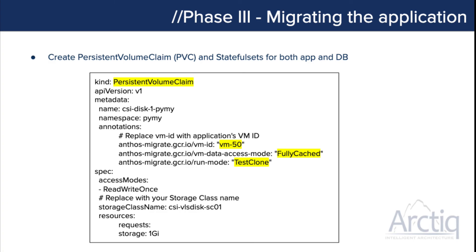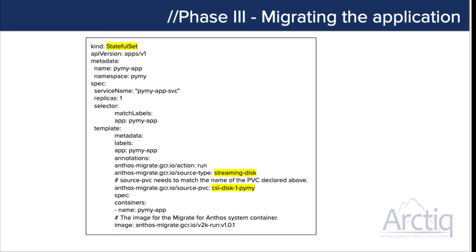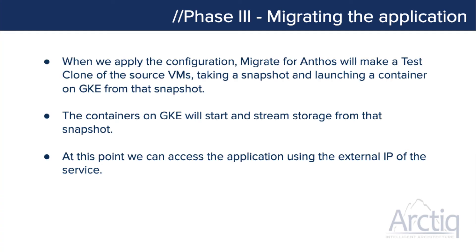We'll configure the run mode to 'test clone'. VMware will take a snapshot of the VM and we'll be able to stream that virtual machine into GKE. The other option is shutting down the virtual machine and moving it, but test clone allows us to continue using the VM on-prem while we move things into cloud. In the stateful set configuration we're going to use streaming disk, which allows the pods to stream the PV disk information. We provide the PVC name in the configuration so it knows where to mount. When we apply this, Migrate for Anthos will take a clone and snapshot of the VM on-prem and start spinning up a container in GKE while migrating the data.